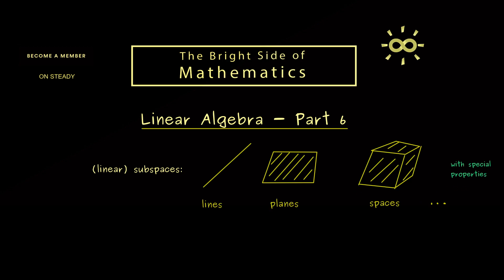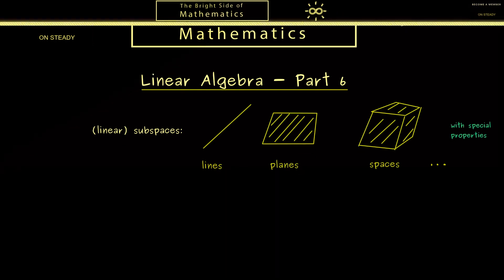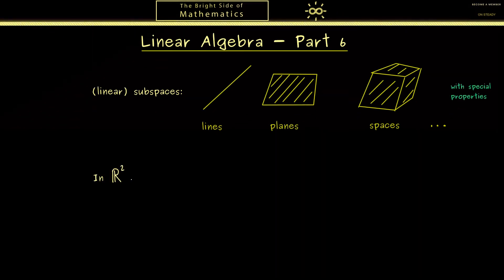But maybe let's first start with something we already know. Namely, we have already considered subspaces in the vector space R². Of course we can easily visualize this vector space as a plane. And now you surely remember that in part 4 we have discussed lines in the plane. On the one hand we had lines that go through the origin, and on the other hand we had lines that don't go through the origin.